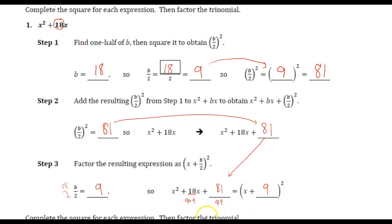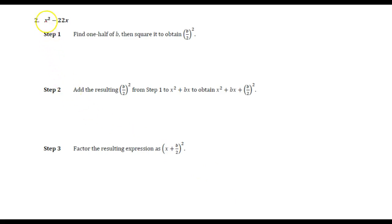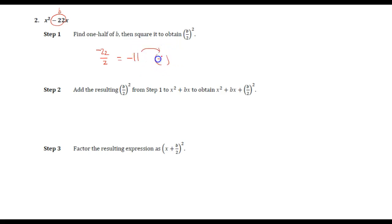It says complete the square for each expression and then factor the trinomial. The next problem is x squared minus 22x. This is my b value, so I'm going to cut that in half, which would be negative 11. I can then take that and square it — what would negative 11 times negative 11 be? You would have found that to be 121.